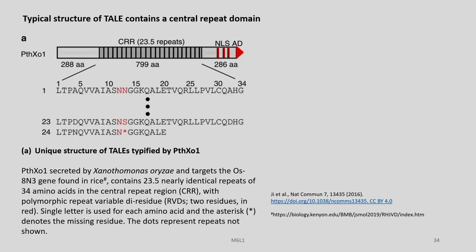This is the TAL of PthXo1 from Xanthomonas oryzae, and this targets the OS183 gene which is found in rice. This contains around 23.5 nearly identical repeats of 34 amino acids in the central repeat region with polymorphic repeat variable di-residue.